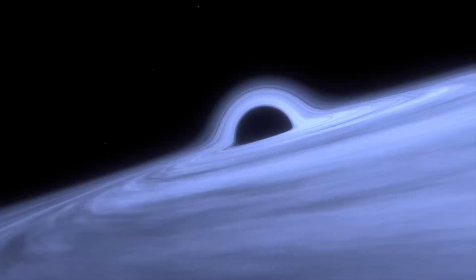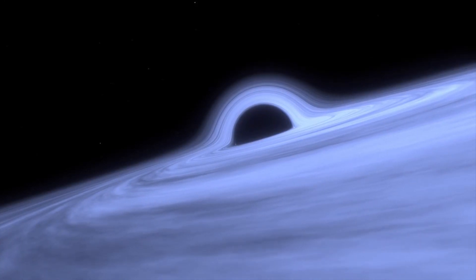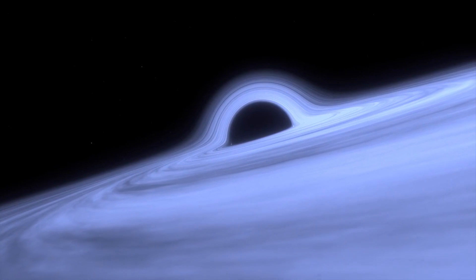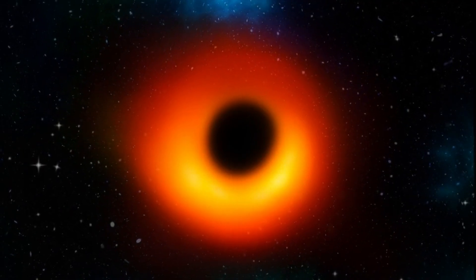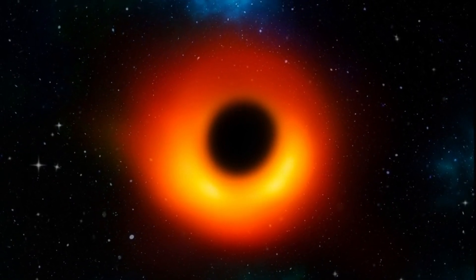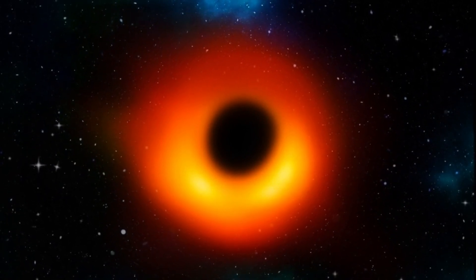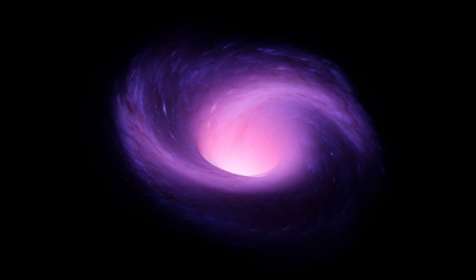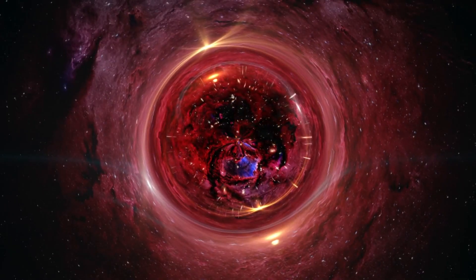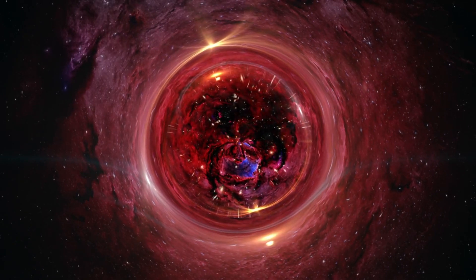Scientists have been fascinated by black holes for centuries, ever since they pondered objects in space so massive and dense that they could trap light. The most famous ideas about black holes were predicted by Einstein's theory of general relativity. Essentially, when a massive star dies, it leaves behind a tiny, dense core. If this core's mass is more than three times that of the sun, gravity overwhelms everything else, leading to the formation of a black hole.